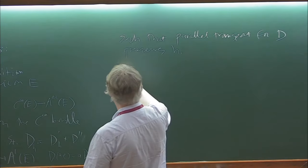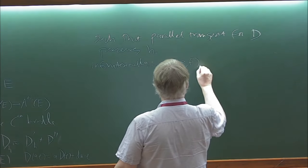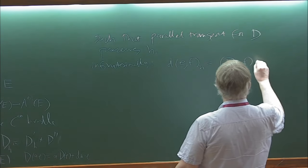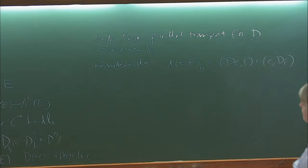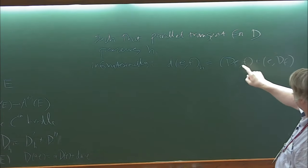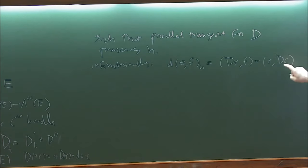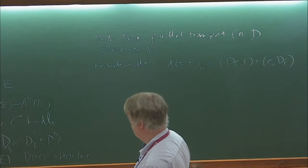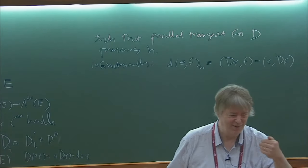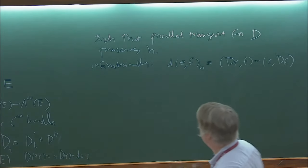The infinitesimal version says that d of the pairing (e,f)_h equals (de, f) plus (d df), where the d acts on the scalar product of a form times a section of E. Since the d-bar parts come out with complex conjugation, the Hermitian property is on the second variable. So if you have a holomorphic structure operator and a metric, there exists a unique compatible connection.